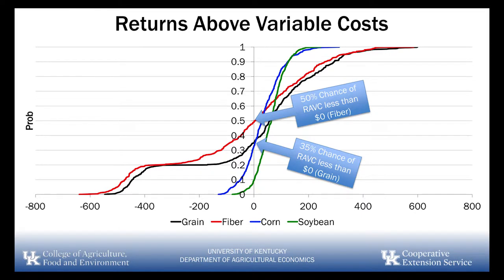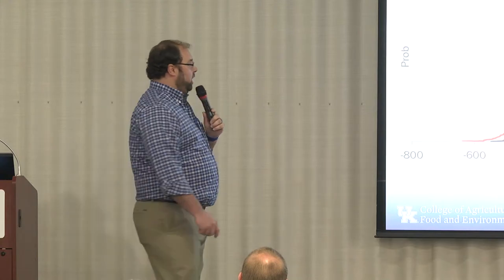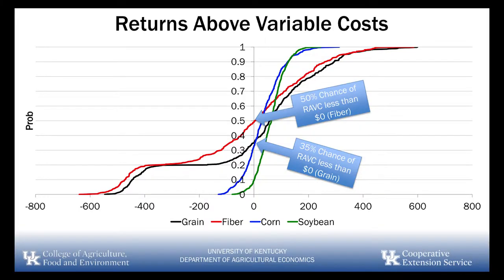That 20% chance of failure also shows up in the graph. So when producers call and ask me if they want to get in this, I ask: are you willing to lose and can you lose $600 an acre? If you can't afford to do that, it may not be a crop for you. That's the point-blank honest economic side of it.